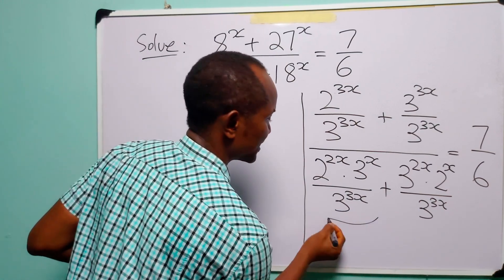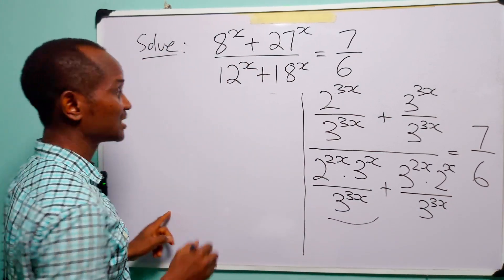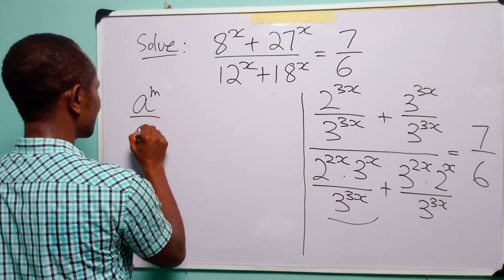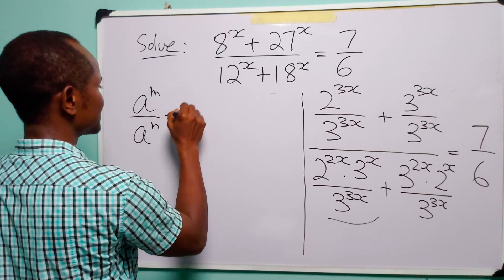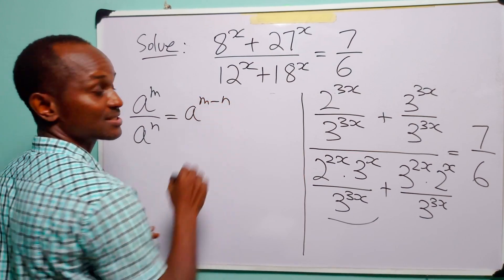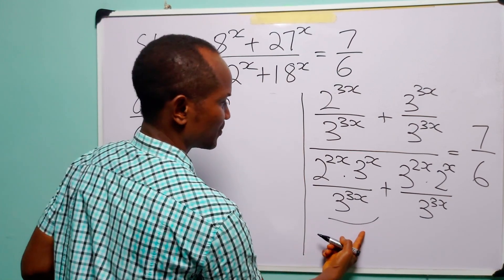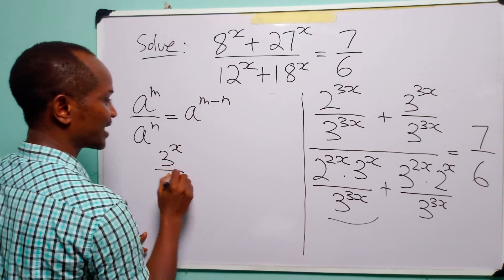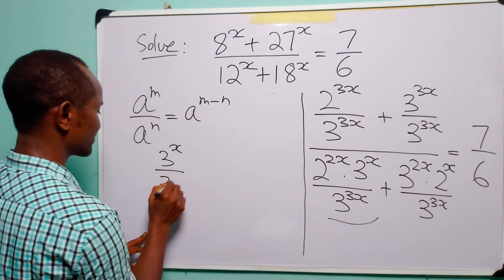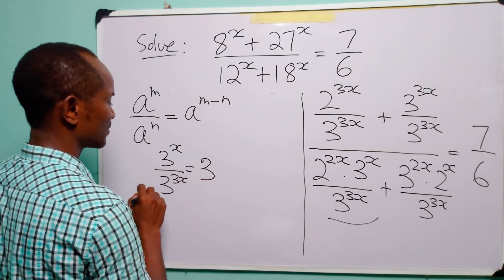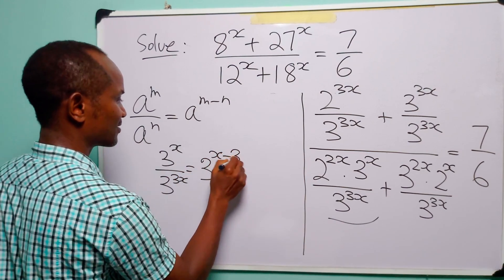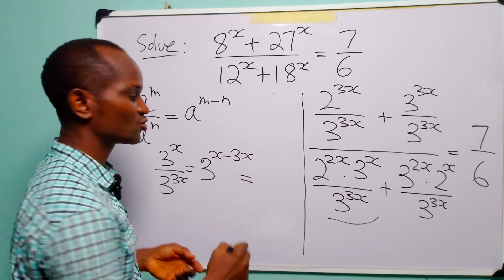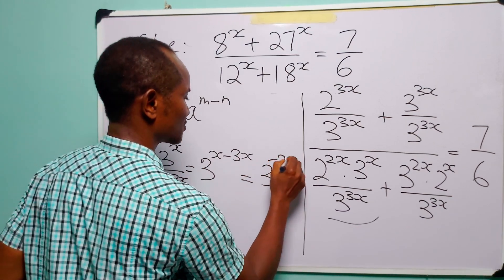Now let us simplify this term. Recall from our laws of indices that when we have a to the power of m divided by a to the power of n, this is simply equal to a to the power of m minus n. So here we have 3 to the power of x divided by 3 to the power of 3x, which equals 3 to the power of x minus 3x, and x minus 3x is minus 2x. That is 3 to the power of minus 2x.